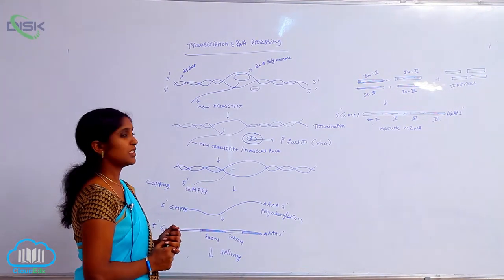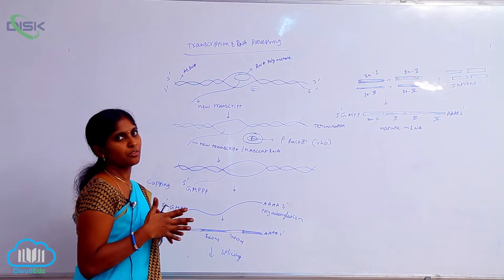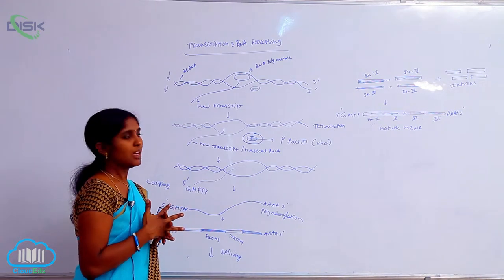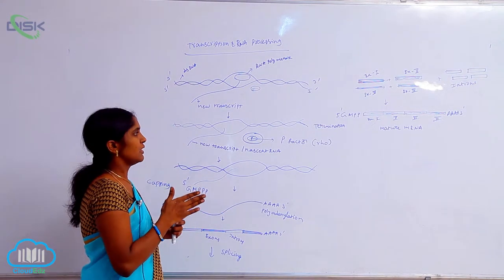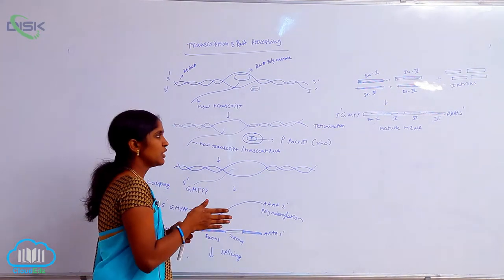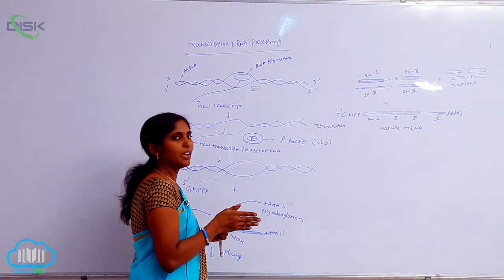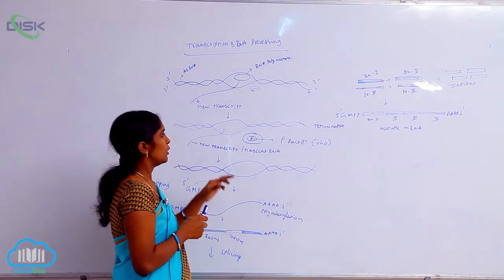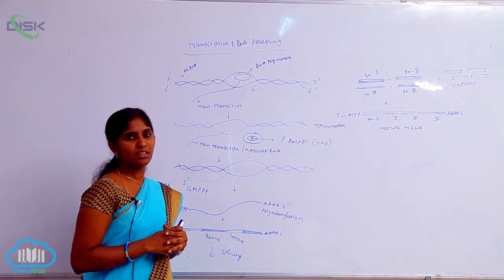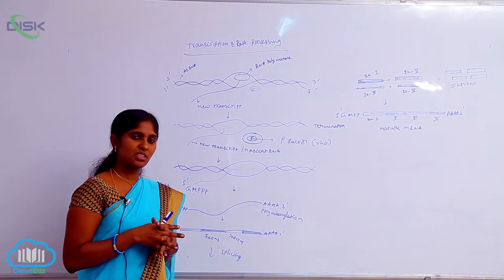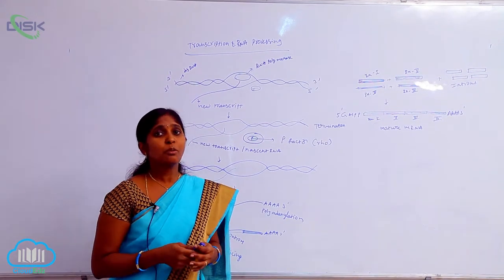When the rho factor joins with the RNA polymerase core enzyme, it inhibits the elongation of RNA transcription, causing termination. At the termination point, the rho factor joins to the RNA polymerase enzyme and termination occurs. After termination, the formed RNA is called heterogeneous RNA, also called pre-mRNA or precursor mRNA.